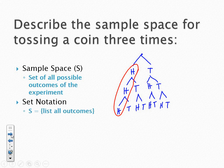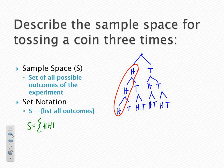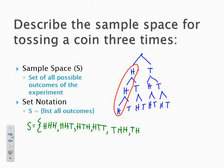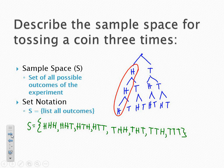In a tree diagram, each branch represents an outcome. As I work my way down a branch — heads, heads, heads — that would be an outcome in the sample space. In your textbook, you'll see set notation used to list out the outcomes. Reading across the tree diagram from left to right, our sample space would be: {HHH, HHT, HTH, HTT, THH, THT, TTH, TTT}.